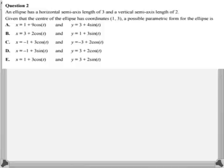Next question. Now this time it's a backwards process. The ellipse has a horizontal semi-axis length of 3 and a vertical semi-axis length of 2. Given that the center of the ellipse has coordinate 1, 3, a possible parametric form of the ellipse is. So we're thinking about information describing the ellipse and we have to work out what the parametric equations are. So what do we know about an ellipse? Well, it has an equation of this form.